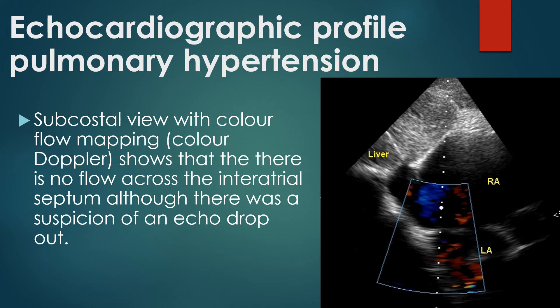Subcostal view with color flow mapping shows no flow across the inter-atrial septum, although there is a suspicion of an echo dropout. There may not be any significant flow across the inter-atrial septum even with an atrial septal defect if right atrial pressures are elevated and equal to the left atrium and the compliance of the right ventricle is reduced due to hypertrophy. In such situations, a transesophageal echo may confirm the presence of an atrial septal defect; in some cases, cardiac catheterization and angiography may be required in addition.